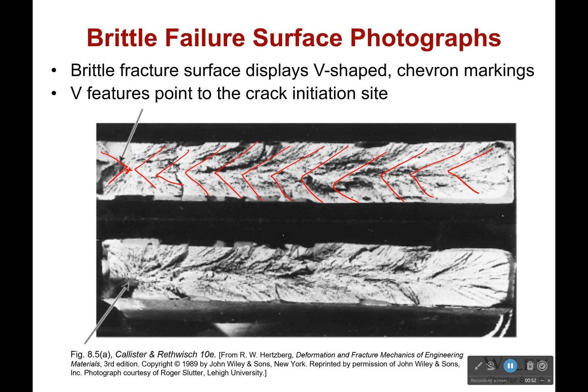Those little V-shaped chevron markings actually point to where the failure began. So there was some sort of impurity right there, some sort of defect in our material that caused failure at that point. That's where the crack began, and then the crack propagated extremely quickly, which led to those chevron markings.